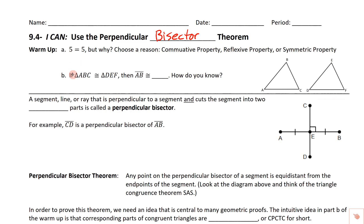It says 5 equals 5. That's like a no-duh, but the question is why. There's actually a mathematical, algebraic, geometric reason why 5 equals 5 that we'll be using in a proof. The commutative property is where we can say things like 3 plus 4 is equal to 4 plus 3. When we move things around in an addition or multiplication problem, it doesn't change the answer. That's the commutative property.